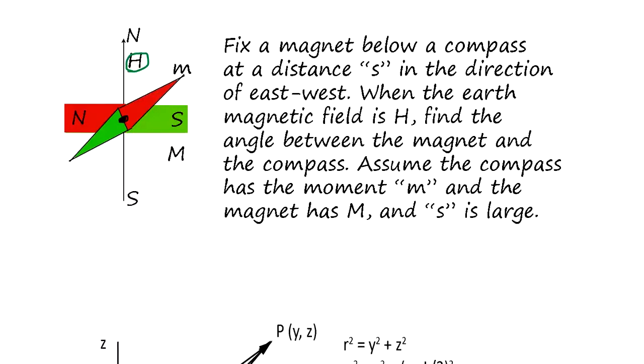Where the earth's magnetic field is H, the compass of course points north. But if you put the magnet below it at the distance s, it's going to be attracted by the magnet and it's going to point at some angle theta. From side view, it's like north and south, and put the compass here.